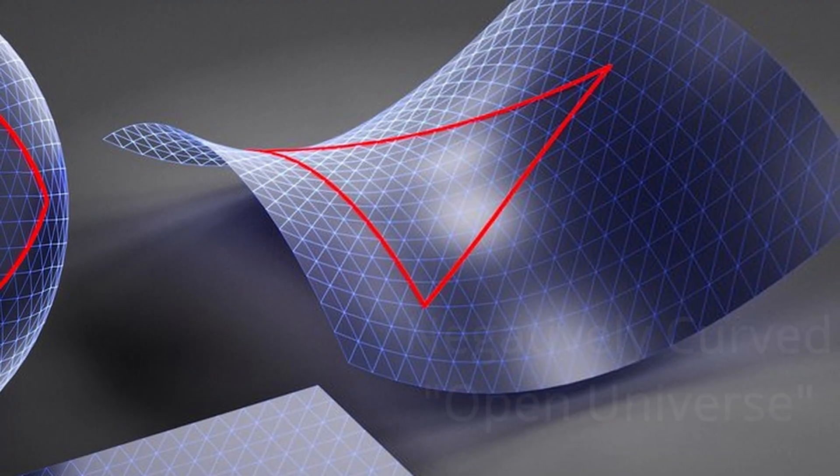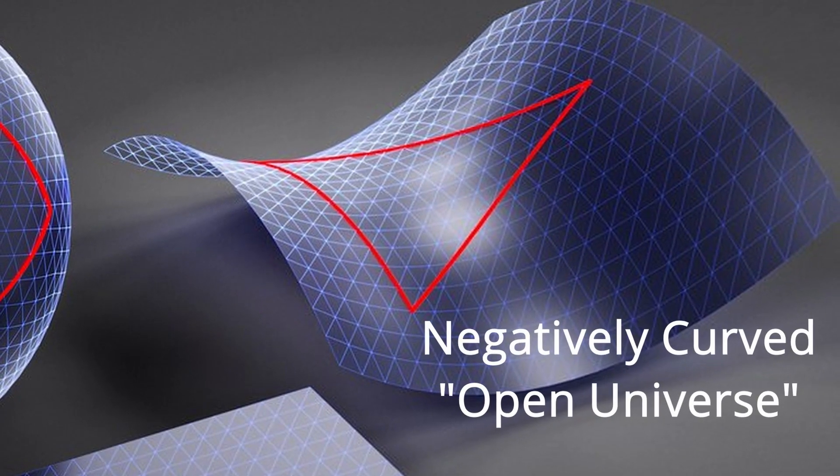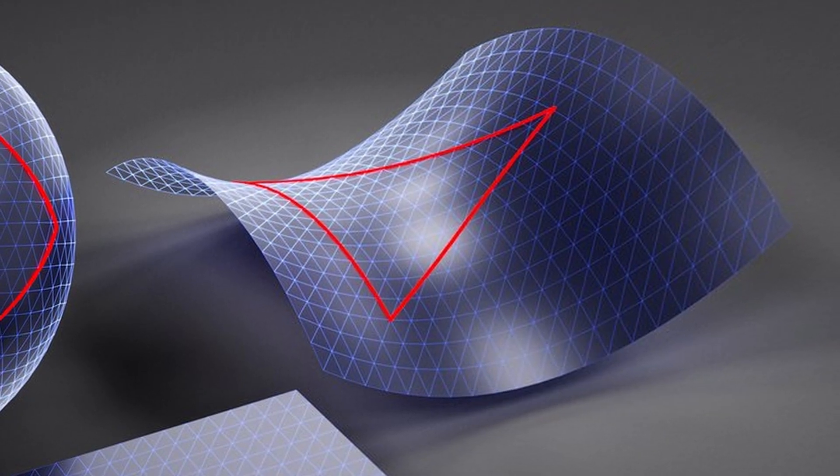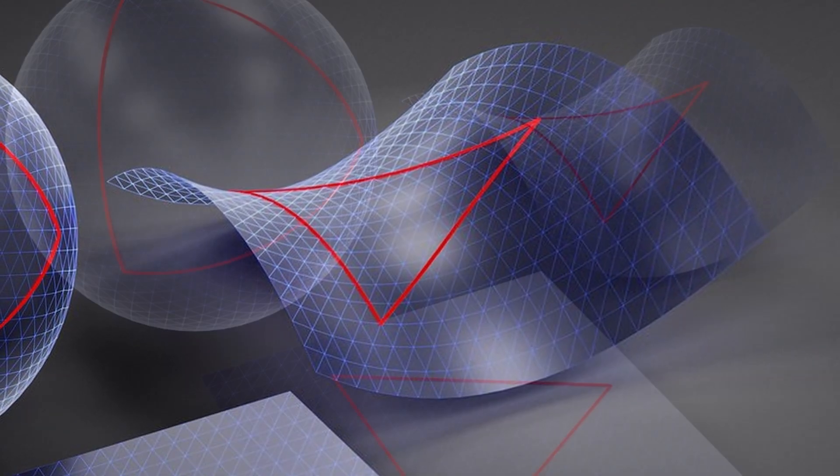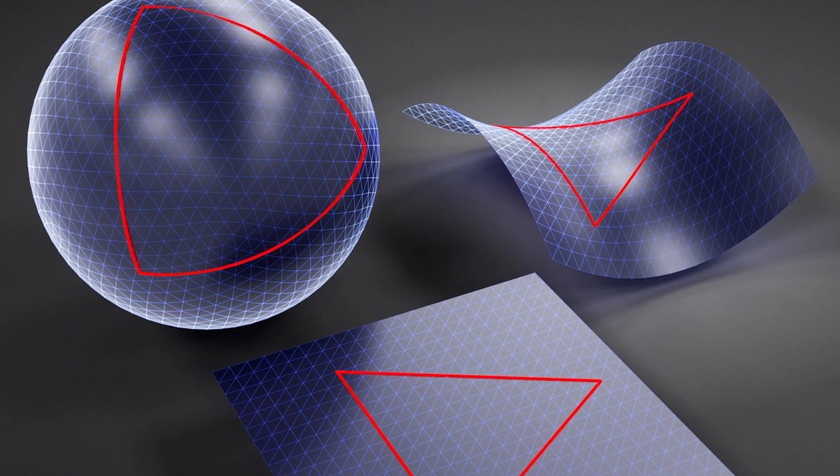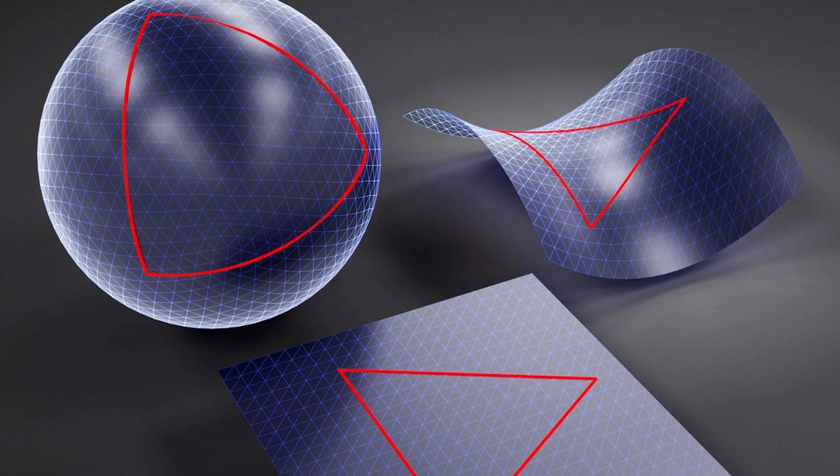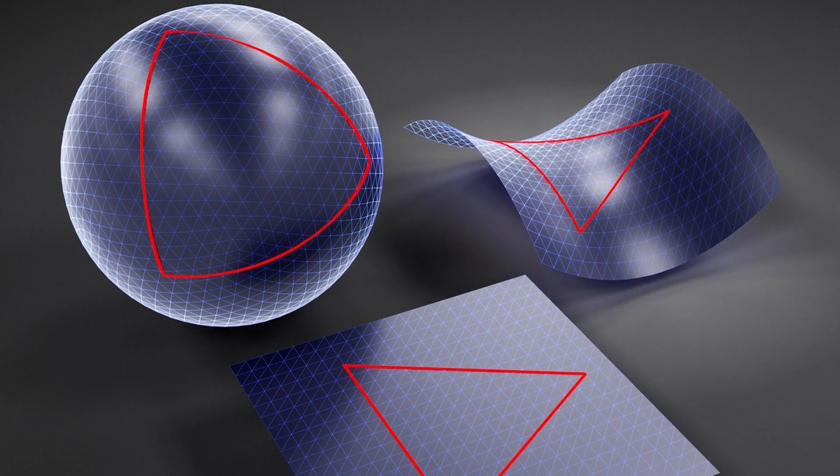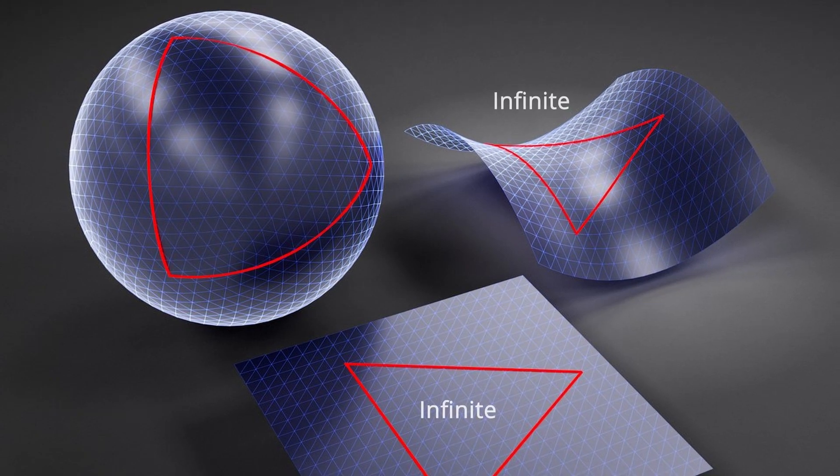Similarly, if it were negatively curved it would also be infinite, although the geometry would be hyperbolic and saddle shaped. Summarizing these three possibilities we can see the importance of determining the curvature of space. Only one geometry results in a finite universe, and the other two suggest it would be infinite.